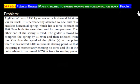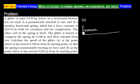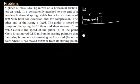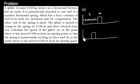Let us try part A first. We have a spring — one end is permanently attached to a wall, and the other end is attached to a mass M with spring constant K. This spring is compressed by a distance X0.